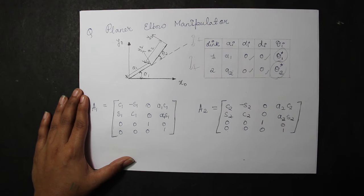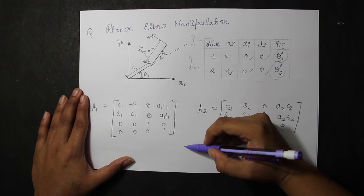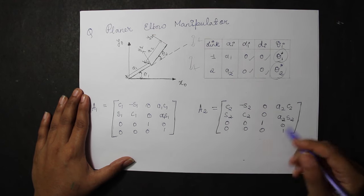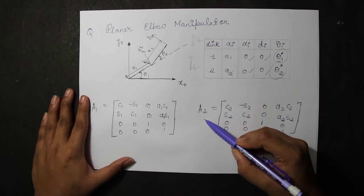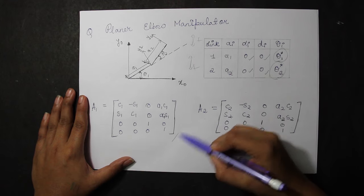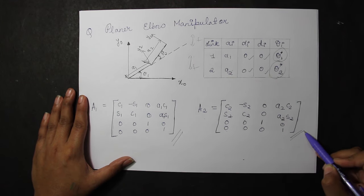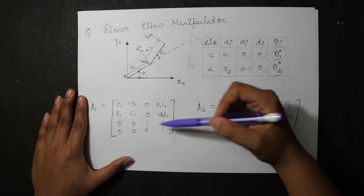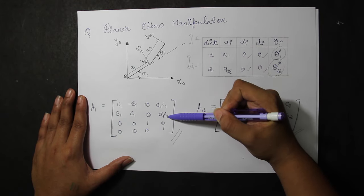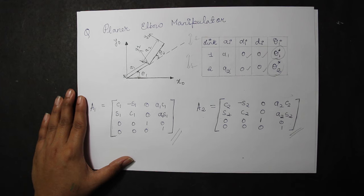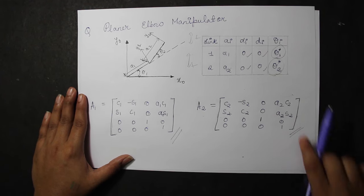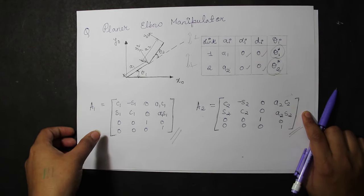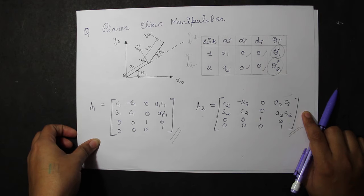When we put it into both the link formula, that is, A1 homogeneous transformation and A2 homogeneous transformation, you simply put the values of, that is, cos theta 1, sin theta 1, A1 cos theta 1, alpha 1, sin theta 1 and similarly for cos theta 2, sin theta 2 and so on. When you receive both the matrices A1 and A2, what we need to do to find out the forward kinematics is really important.